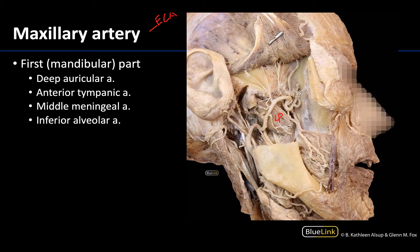That name change to the third part doesn't really occur until you get towards the pterygomaxillary fissure, which is in this general region over here, as it enters the pterygopalatine fossa. So you don't get many of those branches until you're headed into that region. We're going to focus on the branches of the first and second parts in this video, since we're focused on the infratemporal fossa, and save the third part for another session. So let's start with the first part.